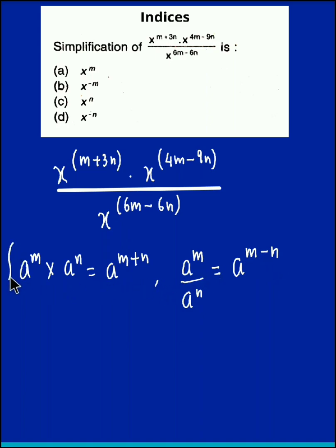So applying these two laws over here we could simplify this as x raised to m plus 3n plus 4m minus 9n. We use the first law between these two terms and since there is a division here, we apply the second law. So we have minus of 6m minus 6n.